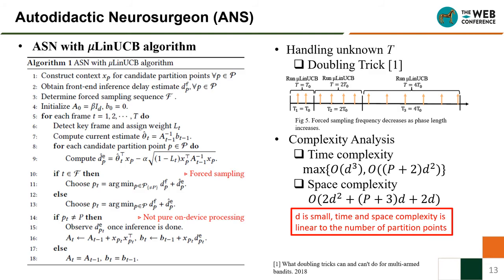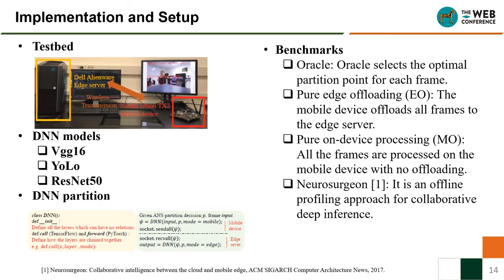We summarize ANS with New LinUCB as follows: it contains linear estimation, frame weights, and forced sampling when making partition point decisions. To handle low N_T, we introduce the doubling trick technique. We also give complexity bounds for ANS — the time and space complexities are linear to the number of partition points. We use an NVIDIA Jetson TX2 developer module as the mobile device and a PC with an NVIDIA GPU as the edge server, connected by point-to-point Wi-Fi. We test ANS on three DNN models: VGG16, ResNet50, and AlexNet.